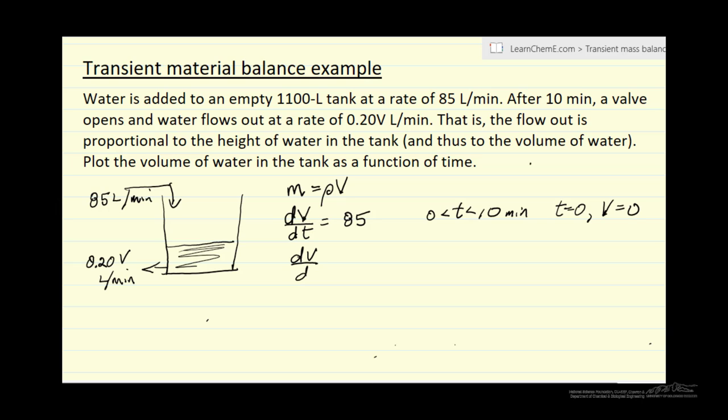After 10 minutes when we open the valve, we still have the flow in, but now we have the rate of flow out proportional to volume: dV/dt = 85 - 0.20V. This is for t greater than 10 minutes.